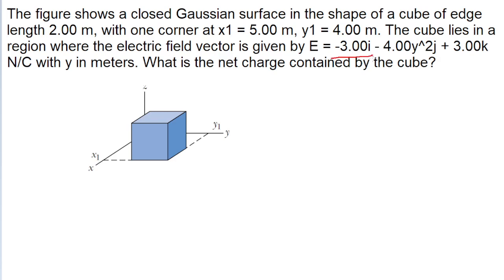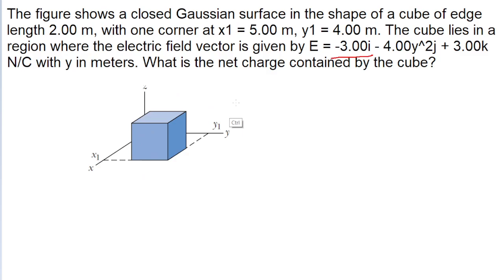Those terms are the constant terms. Take this I component, for example, which points along the X axis. It's a negative term in the I-hat direction, which means it's traveling through the cube in that direction. But because the term is constant, nothing about the magnitude of the electric field is going to be changing along that component. In order for there to be a net flux, there needs to be more coming out than coming in, or vice versa. If the same amount of field is entering as it is exiting, there is no net flux. Because the negative 3i component is constant, the same amount of field that enters is the same amount that exits, so there is no contribution to the flux from either of the constant terms.